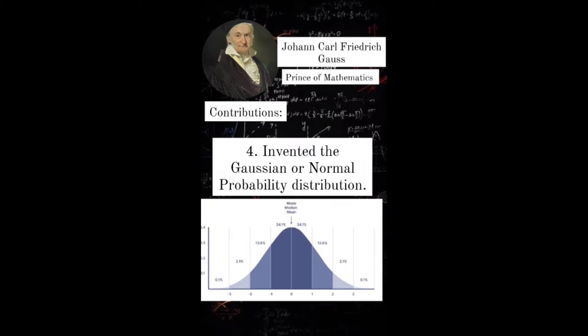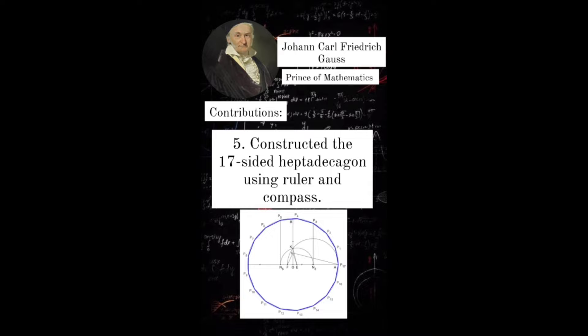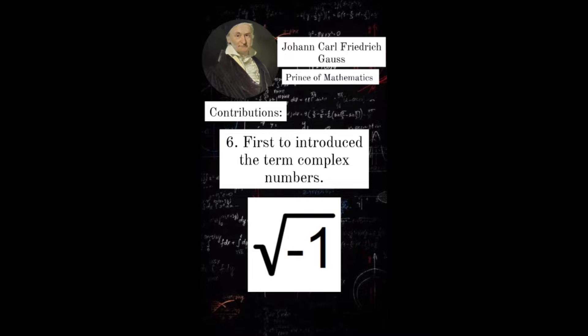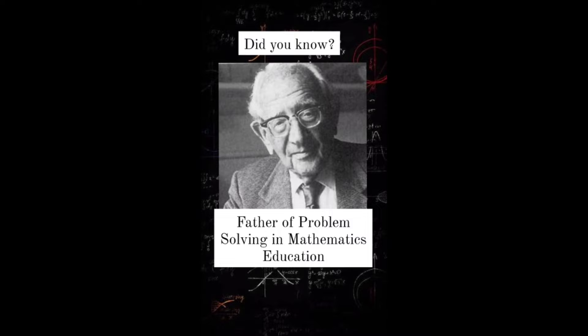Fourth, invented the Gaussian or normal probability distribution. Fifth, constructed the 17-sided heptadecagon using ruler and compass. Sixth, first to introduce the term complex numbers.